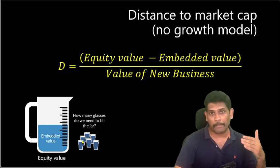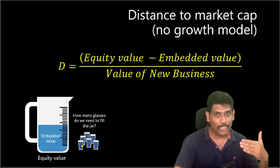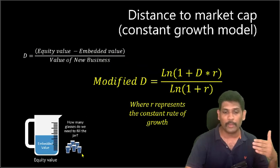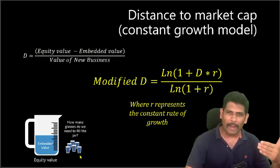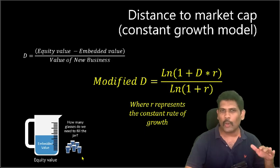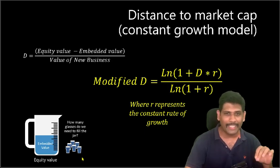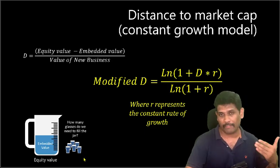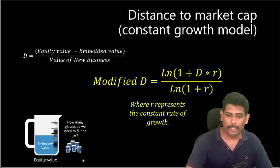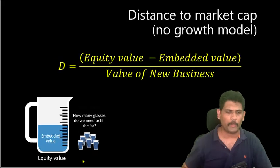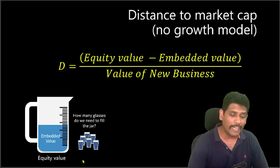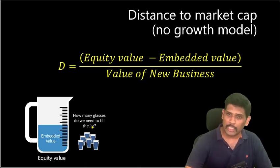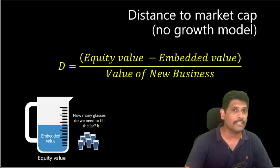Of course, companies' value of new business is not going to remain static — it would grow. In that case, we have one more model, which is the constant growth model. The mathematics gets a little complicated, so I will not get into explaining this in detail in this video. But this is one more model we can factor in when there is a constant growth rate. Let me go back to the original model — the distance to market cap without any growth in value of new business.